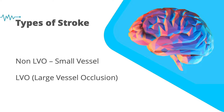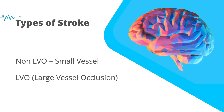Types of strokes. There are two types of strokes: large vessel occlusion and non-large vessel occlusion, also called small vessel occlusion.